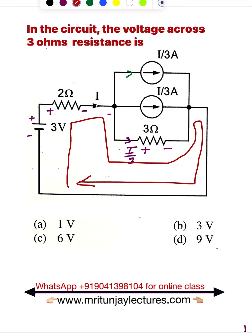So minus 3 volts plus 2 times capital I plus 3 times I/3 equals 0.